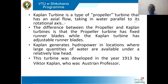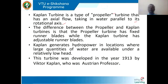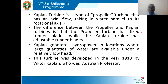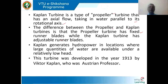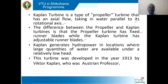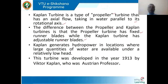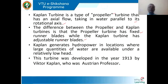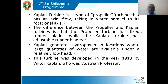The difference between a propeller turbine and a Kaplan turbine: propeller turbine will have fixed runner blades, whereas the Kaplan turbine has adjustable blades. That is the only difference between the Kaplan turbine and the propeller turbine. Kaplan turbine is used in hydro-power projects where large quantities of water are available and the available head is very low.